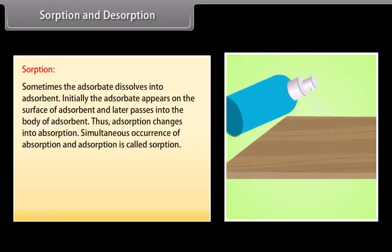Sorption: sometimes the adsorbate dissolves into the adsorbent. Initially the adsorbate appears on the surface and later passes into the body of the adsorbent, so adsorption changes into absorption. The simultaneous occurrence of absorption and adsorption is called sorption.